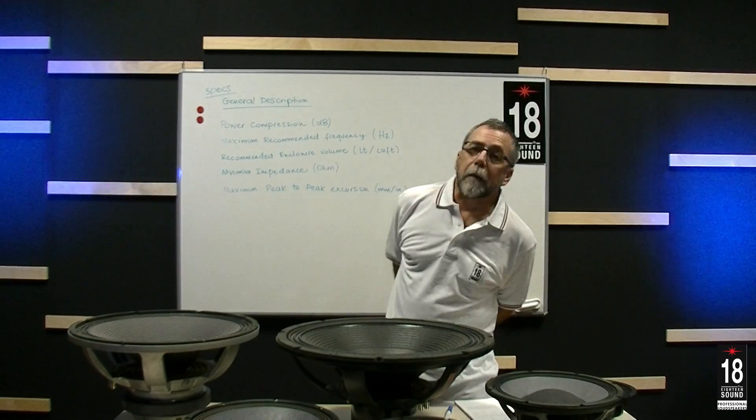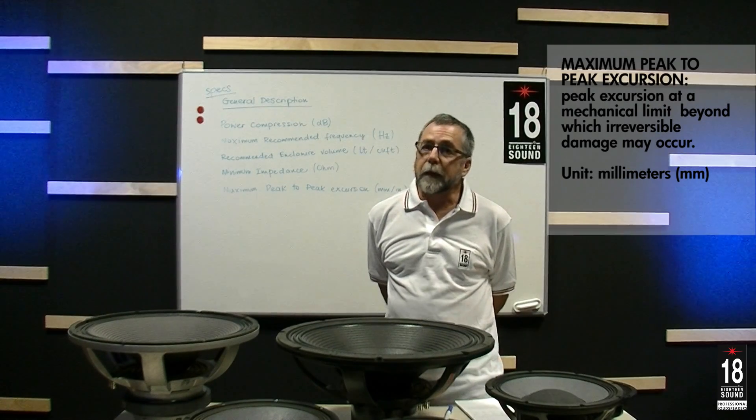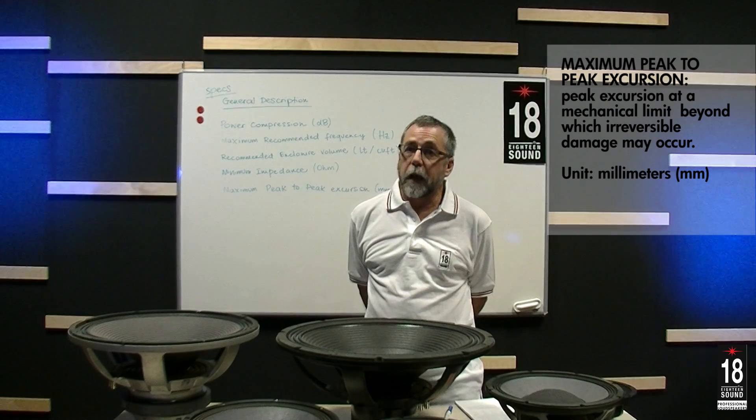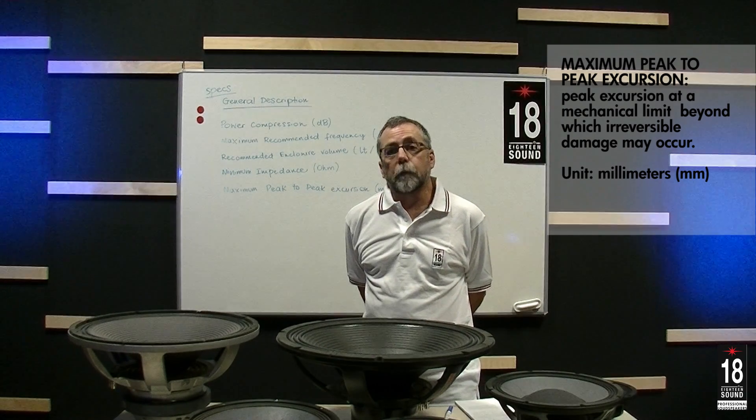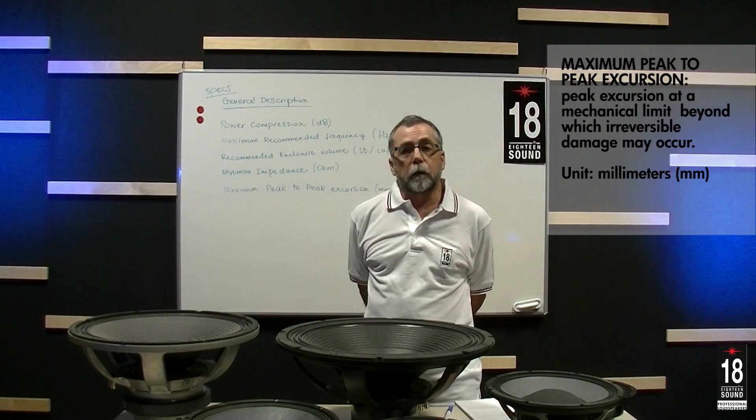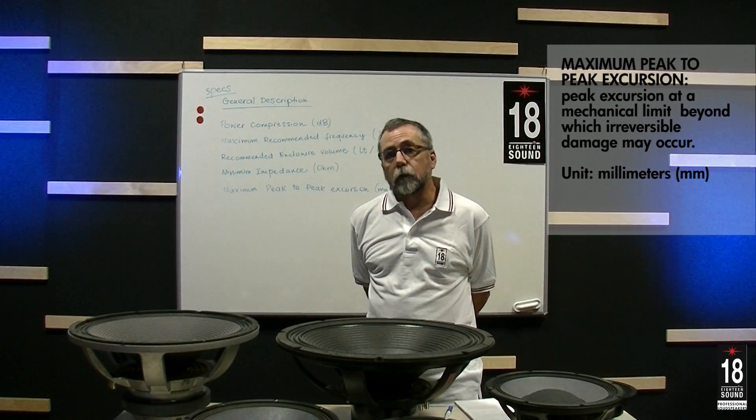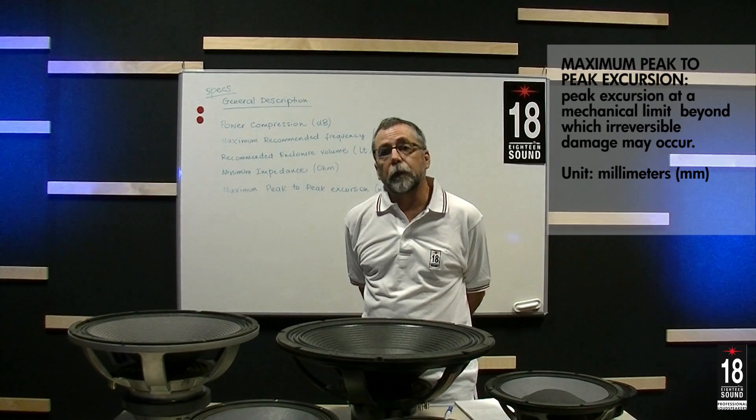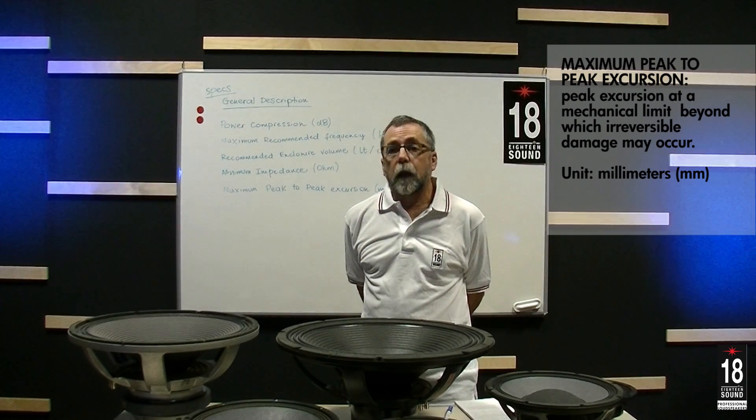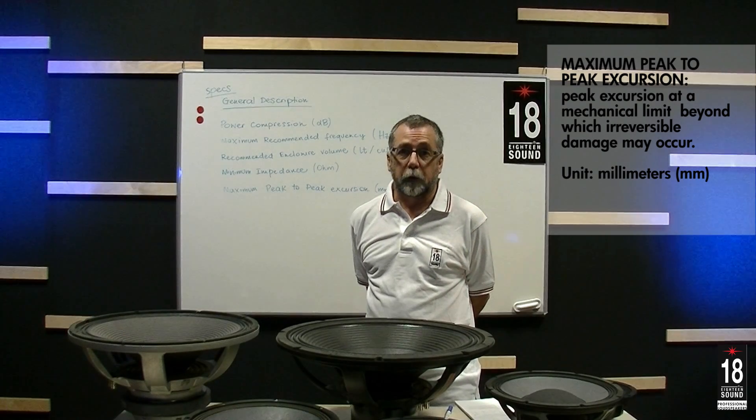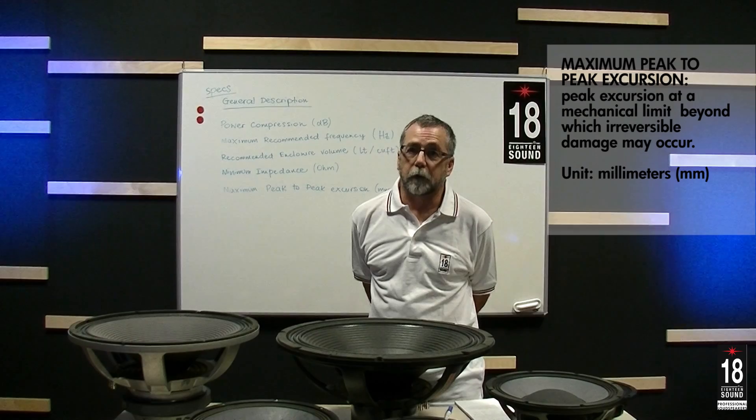And then there's the maximum peak-to-peak excursion. This is a mechanical limit at which point permanent damage may happen. That is, a voice coil may strike a back plate, a spider might strike a front plate, or the suspension, spider, or surround may be at maximum extension. And though that may not cause damage on a first experience, over time it does fatigue the loudspeaker.